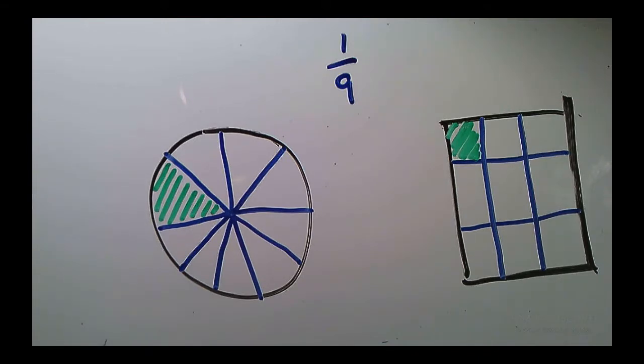So our circle is really great for starting us off, and we'll usually see the circle for 1 half, 1 third, 1 fourth, possibly 1 sixth. As we get to less common or more complicated denominators, then the rectangle becomes better.